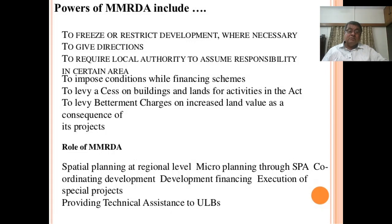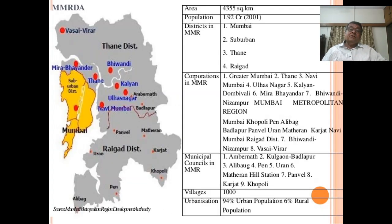MMRDA also provides technical assistance to ULBs. MMRDA at a glance: Area 4,355 square kilometers; population about 1.94 crore; districts in MMR: Mumbai Suburban, Thane, and Raigad; corporations in MMR: Greater Mumbai, Thane, Navi Mumbai.